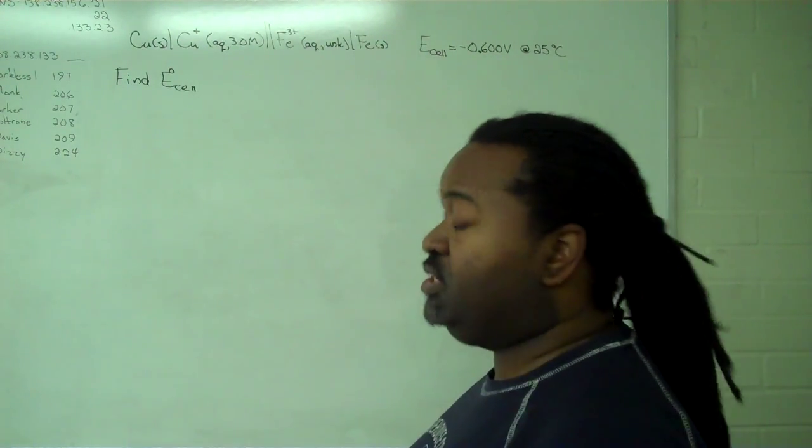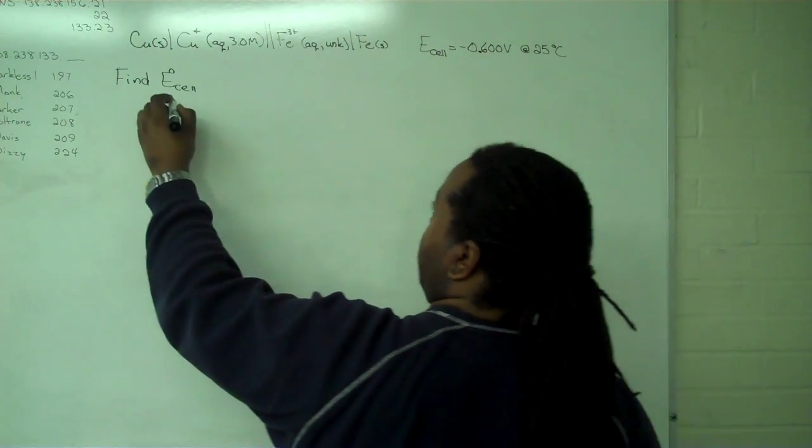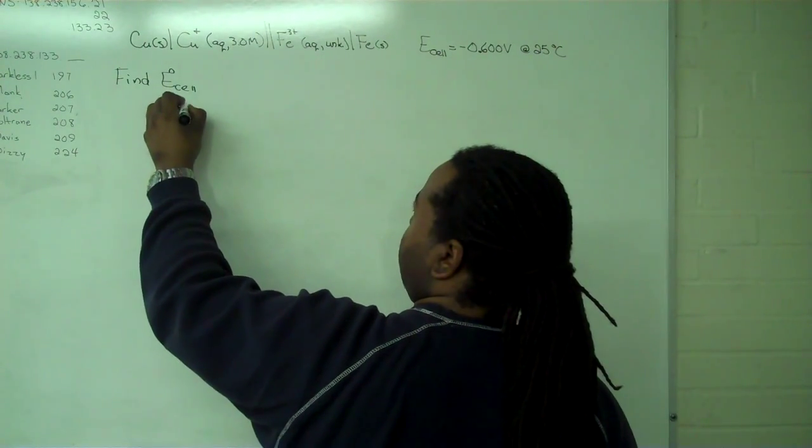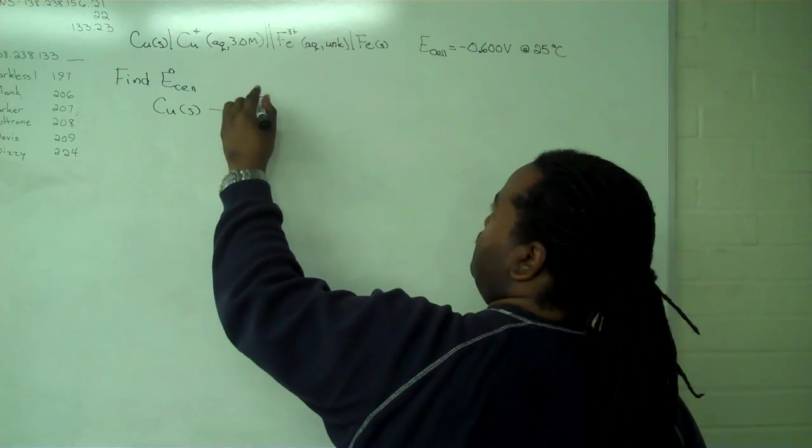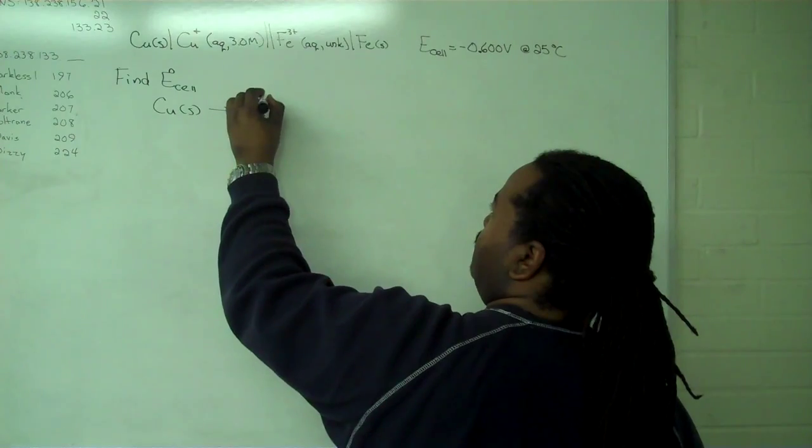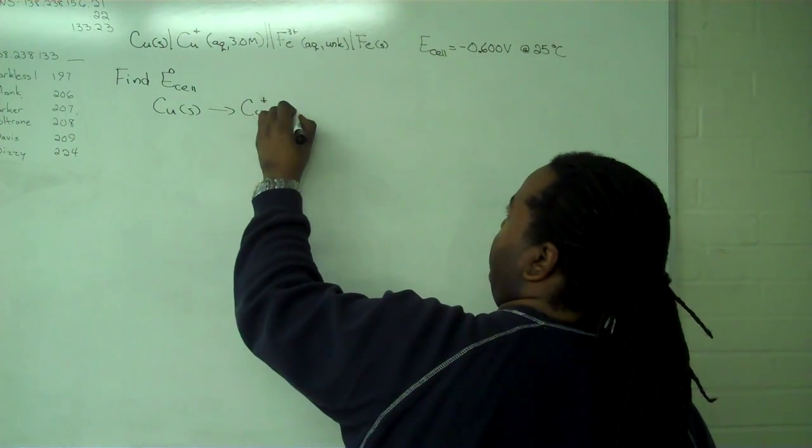In order to do this, we'll need to write out the reactions for each half cell. So our first one is solid copper, and this is very straightforward to solve because we only need to add one electron.